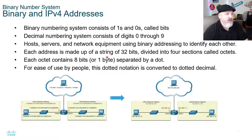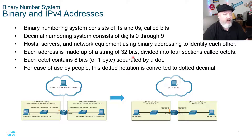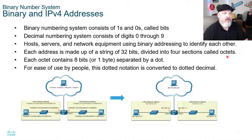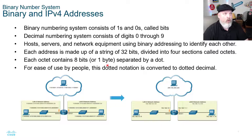Each address is made up of a string of 32 bits. A one or a zero is a bit — you need to know that. That's a bit of information you need to study for your exams. A bit is a one or a zero. It's divided into four sections called octets. That's another term you need to be familiar with — an octet. Four sections called octets, and each octet contains eight bits, or one byte.